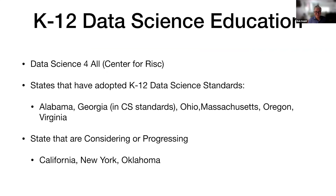One thing that's changed now, 11 years later, is we now have K-12 data science education as a thing, and there are a number of initiatives underway. There's a group called Data Science for All, from the Center for Risk out of the University of Chicago, founded by Steve Levitt of Freakonomics fame. It's an informal organization of educators, school administrators, researchers in statistics, data science, computer science, and education, working on how to promote data science for all. A number of states have adopted data science standards in K-12 — for most of these states those standards are in the mathematics curriculum, but Georgia has put them into their computer science standards.